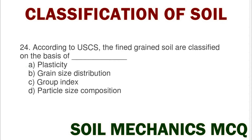Next question: according to USCS, fine grains are classified on the basis of option A plasticity, option B grain size distribution, option C group index, option D particle size composition. The correct answer is option A plasticity.